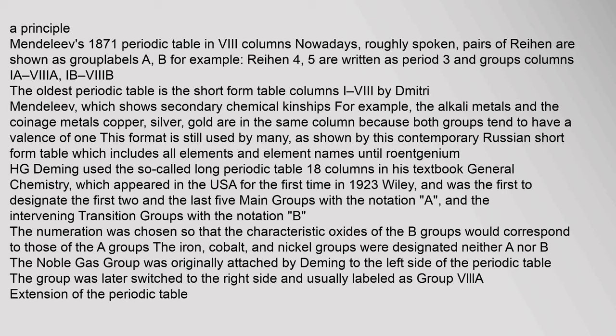The short-form table shows secondary chemical kinships — for example, the alkali metals and the coinage metals (copper, silver, gold) are in the same column because both groups tend to have a valence of one. This format is still used by many, as shown by a contemporary Russian short-form table which includes all elements and element names until Roentgenium.